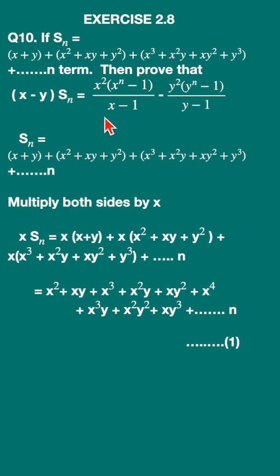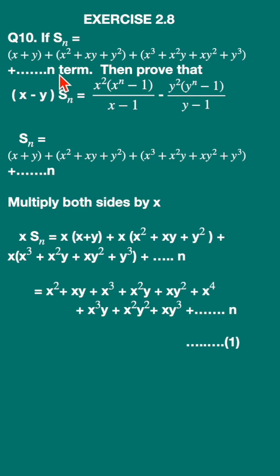This is a very simple sum, actually not difficult — you can score full marks. What we are going to do is: S_n is given by this expression. I will multiply S_n with x first and simplify, then multiply with y and simplify, then compute x·S_n minus y·S_n to get the LHS.